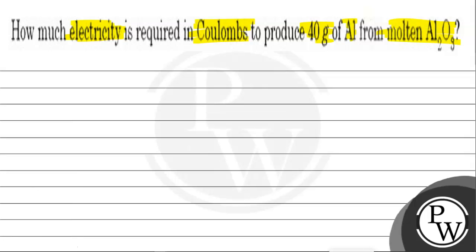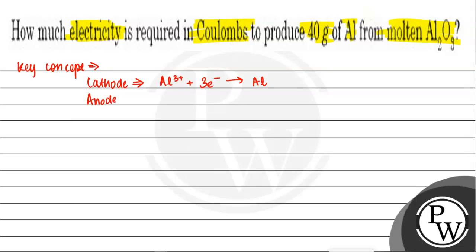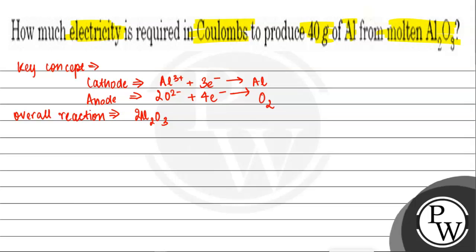So, we have to write the key concept of this question. The key concept will be the reactions which will take place. The reaction at the cathode will be: Al³⁺ + 3e⁻ → Al. And the reaction at the anode will be: 2O²⁻ → O2 + 4e⁻. So our overall reaction will be: 2Al2O3 → 4Al + 3O2.